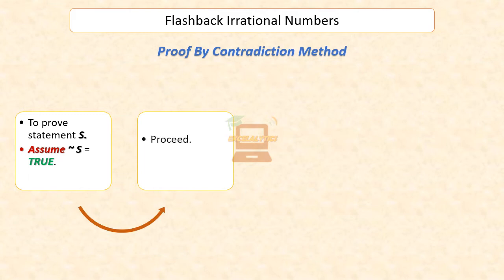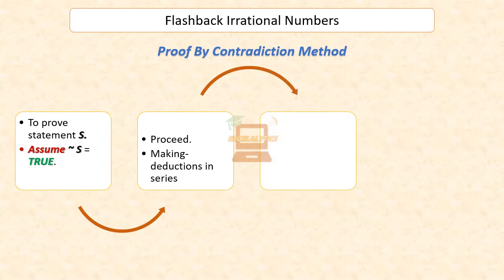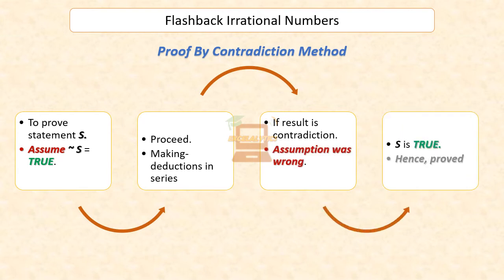We then proceed by making a series of logical deductions based on the truthfulness of the negation of s. If this leads to a contradiction, then the contradiction arises because of our faulty assumption that s is not true.